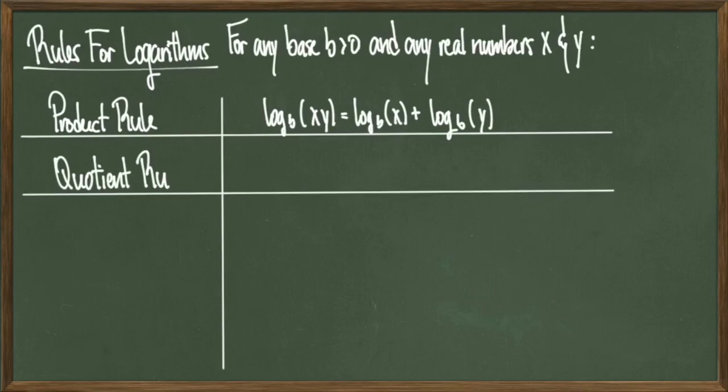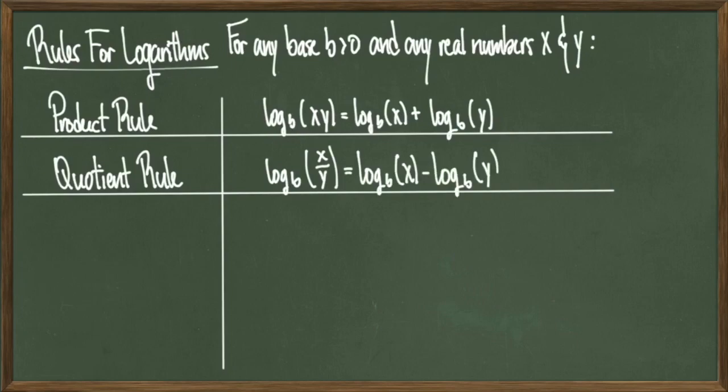The next property is called the quotient rule. If I have a quotient within a log, it splits into the difference of one log with the other. Both have the same base, and each will have the component of the original quotient. Notice how the numerator is first and the denominator comes second, where on the right-hand side the denominator is no longer part of a fraction. So with the quotient rule, the order of the right-hand side definitely matters.